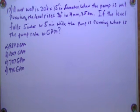A wet well is 20 feet deep by 15 feet in diameter. When the pump is not running, the level rises 36 inches in 4 minutes 25 seconds. If the level falls 5 inches in 5 minutes while the pump is running, what is the pump rate in GPM?